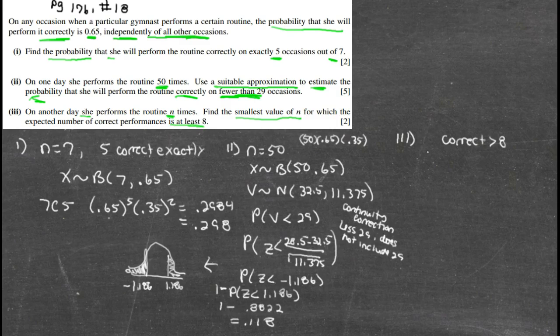We want to find it to be correct at least eight. We're asking basically for the expected value, which all we're going to do is take the number of trials times the probability of success. That's going to be n times 0.65. We want it to be greater than or equal to eight.